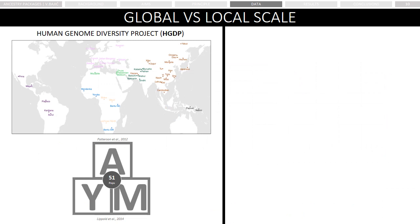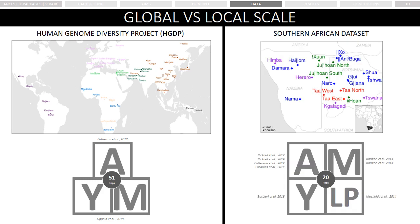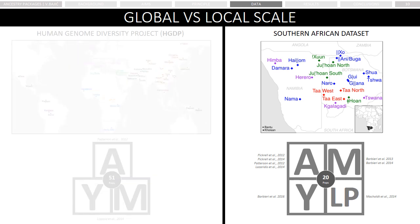In order to test the approach, we applied it to a global dataset with 51 populations, for which we collected autosomal, Y chromosome, and mitochondrial frequency estimates. In addition, we applied it to a local dataset of Southern African populations, for which we additionally included frequencies of lactase persistence alleles, to illustrate that the Ancestry Packages approach could be extended to include any other markers for which frequency estimates are available. Due to time constraints, I will focus only on the results of the local scale.